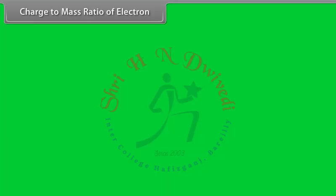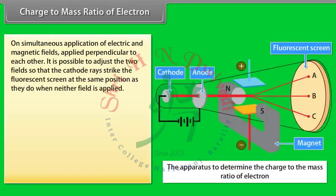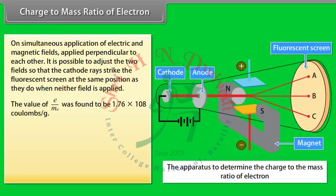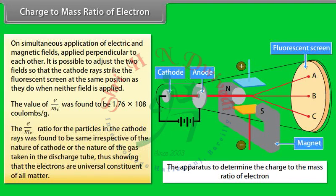Charge to mass ratio of electron: On simultaneous application of electric and magnetic fields applied perpendicular to each other, it is possible to adjust the two fields so that the cathode rays strike the fluorescent screen at the same position as when neither field is applied. The value of charge to mass ratio of electrons was found to be 1.76 × 10⁸ coulombs per gram. The e/m ratio was found to be the same irrespective of the nature of the cathode or the gas in the discharge tube, showing that electrons are a universal constituent of all matter.